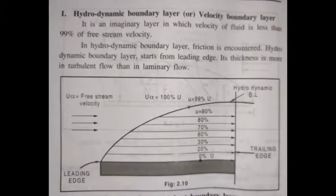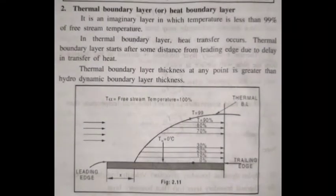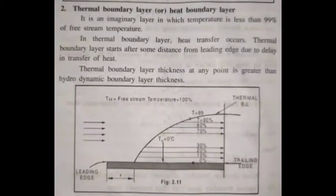The thermal boundary layer is also an imaginary layer in which the temperature is less than 99% of the free stream condition. Its thickness is more in turbulent flow. The thermal boundary layer starts from some distance from the leading edge, whereas the hydrodynamic boundary layer starts from the leading edge itself.